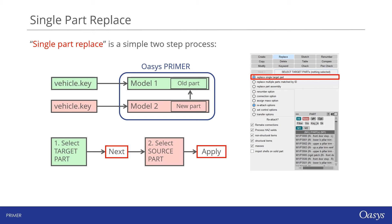Let's begin with replacement of parts using the part replace tool. If we want to replace a single part, this can be achieved by a simple two-step process, but first we'll need to read two models into the same Primer session. Model one represents the target model — the model with the part we'd like to replace — and model two represents the source model, which contains the part we'd like to import. Having loaded these two models, the part replace panel can be opened, and the replacement is achieved by selecting the target part followed by the source part. Note that for a single part replace, there is no need for IDs to match, but the element types will need to be the same. The panel includes numerous options, which we'll spend more time on later.